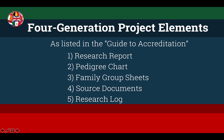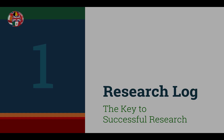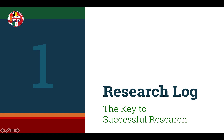Now let's cover the required elements for the Level 1 Four Generation Project. They are listed in the following order in the Guide to Accreditation: the research report, the pedigree charts, the family group sheets, the source documents, and the research log. Let's discuss the research log first because it's such an important foundation to all elements of a successful Level 1 project.